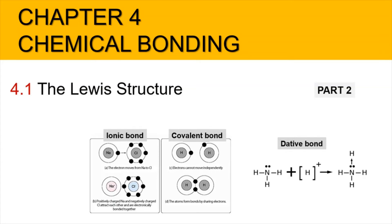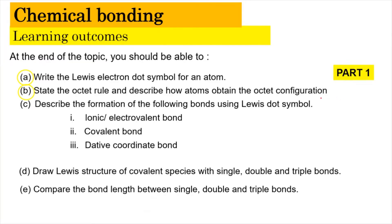Hi, Assalamualaikum and a very good morning. So now we are in Chapter 4, Chemical Bonding, and we're going to focus on subtopic 4.1, the Lewis Structure, part 2 of the video. In this video, we're going to learn how to describe the formation of the following bonds using the Lewis dot symbol: first, the ionic or electrovalent bond; second, the covalent bond; and third, the dative coordinate bond.